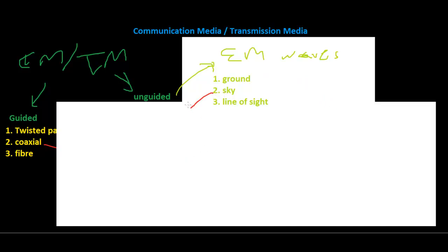Sky waves travel at high frequencies in the ionosphere. Radio waves are between three kilohertz to one gigahertz. Next we have line of sight. Line of sight are very high frequency signals that travel in a straight line—normally microwaves, one gigahertz to 300 gigahertz. And that's really communication media or transmission media in a nutshell.